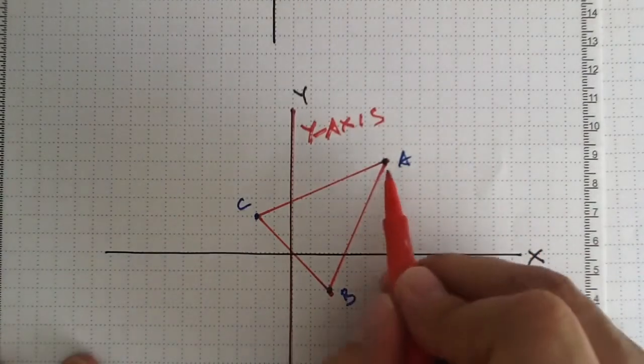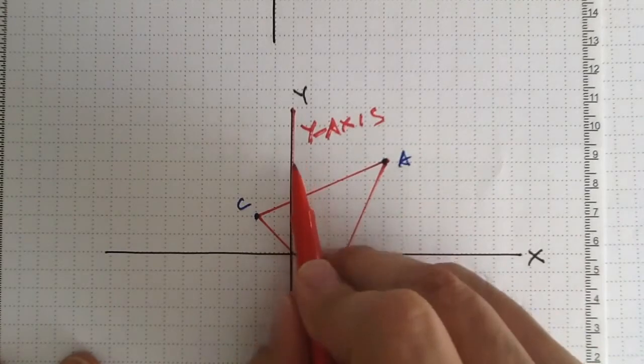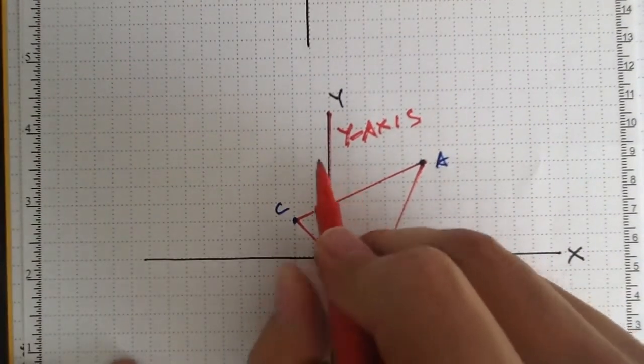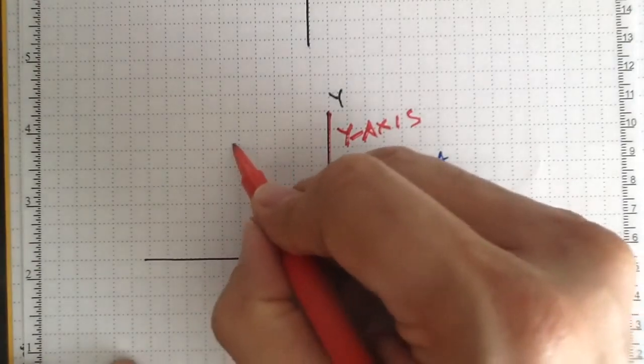So if you can imagine A here, well, A is 1, 2, 3, 4, 5 units away from our mirror, our line of reflection. So I just want to go in the opposite direction, 1, 2, 3, 4, 5 spaces, and this would be A prime.